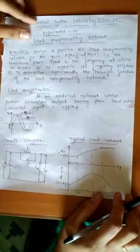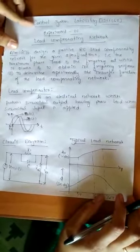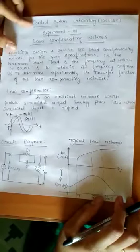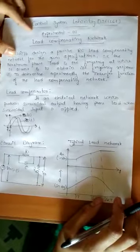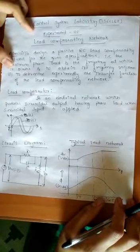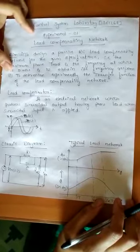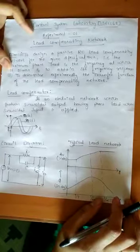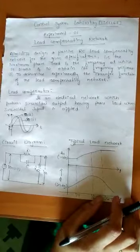The aim of the experiment is to design a passive RC lead compensating network for a given specification, and also to determine experimentally the transfer function of a lead compensating network. First, we will see what is the meaning of a compensator. A compensator is a device inserted into the system for meeting certain specifications.